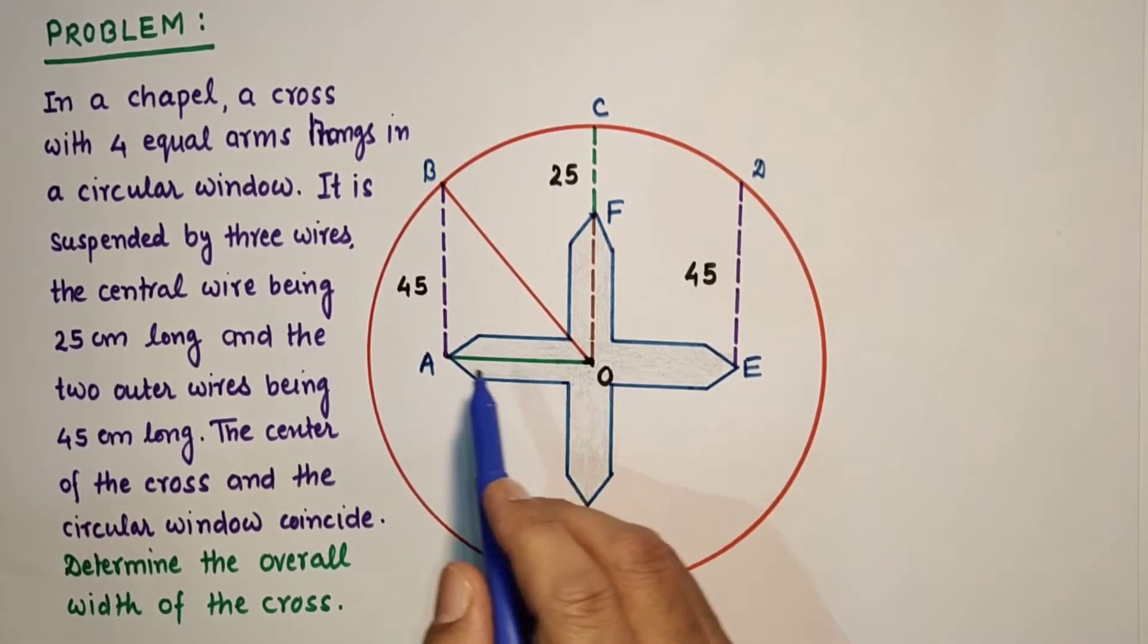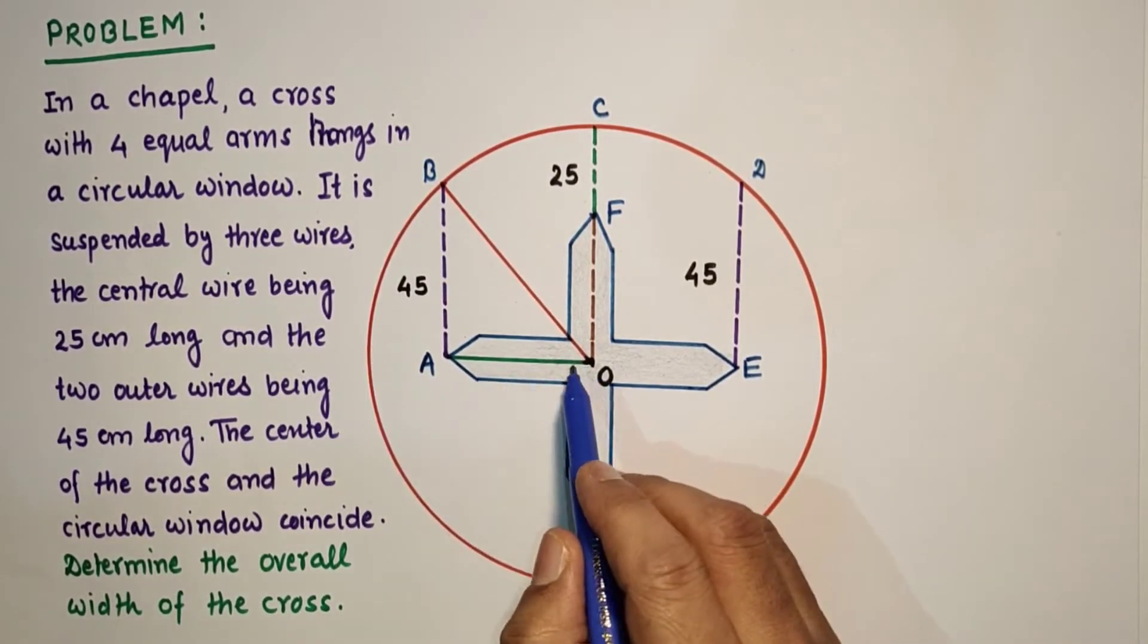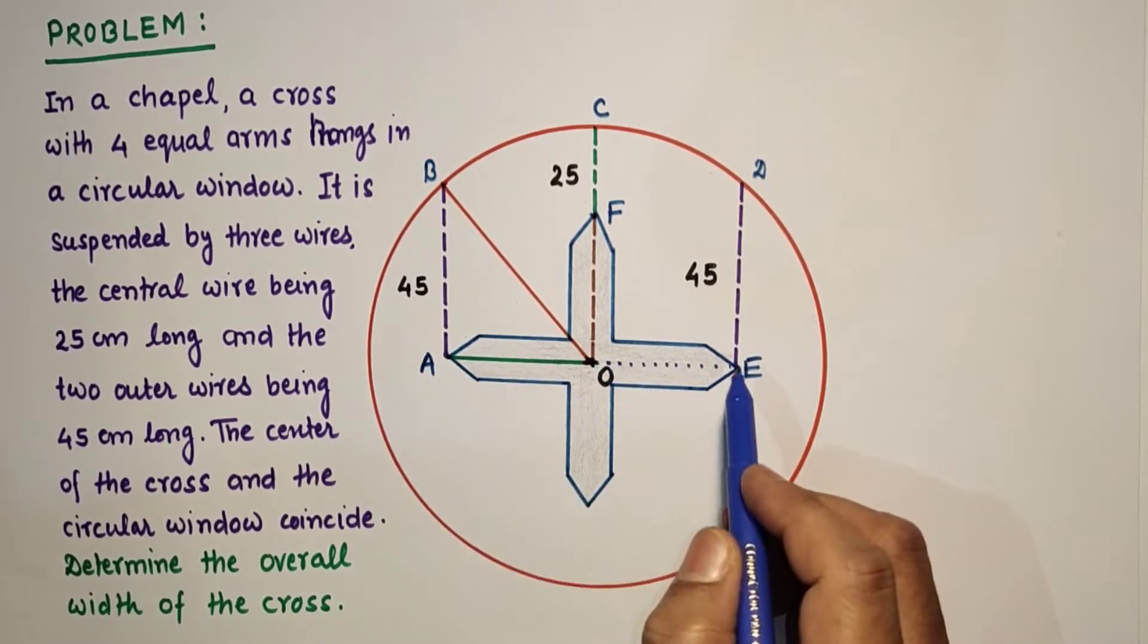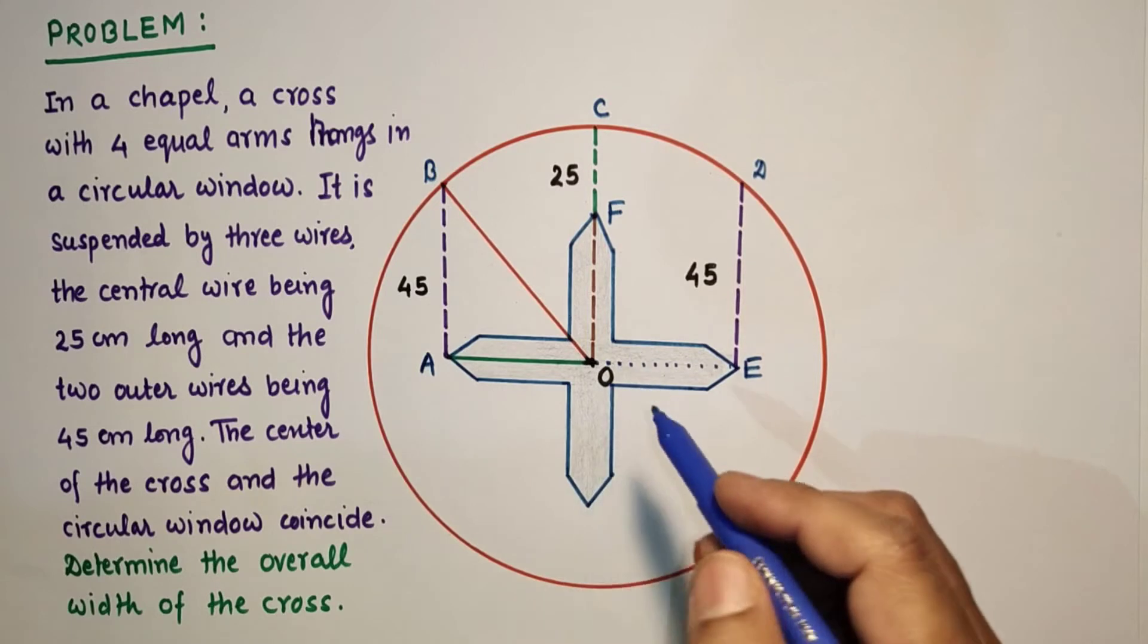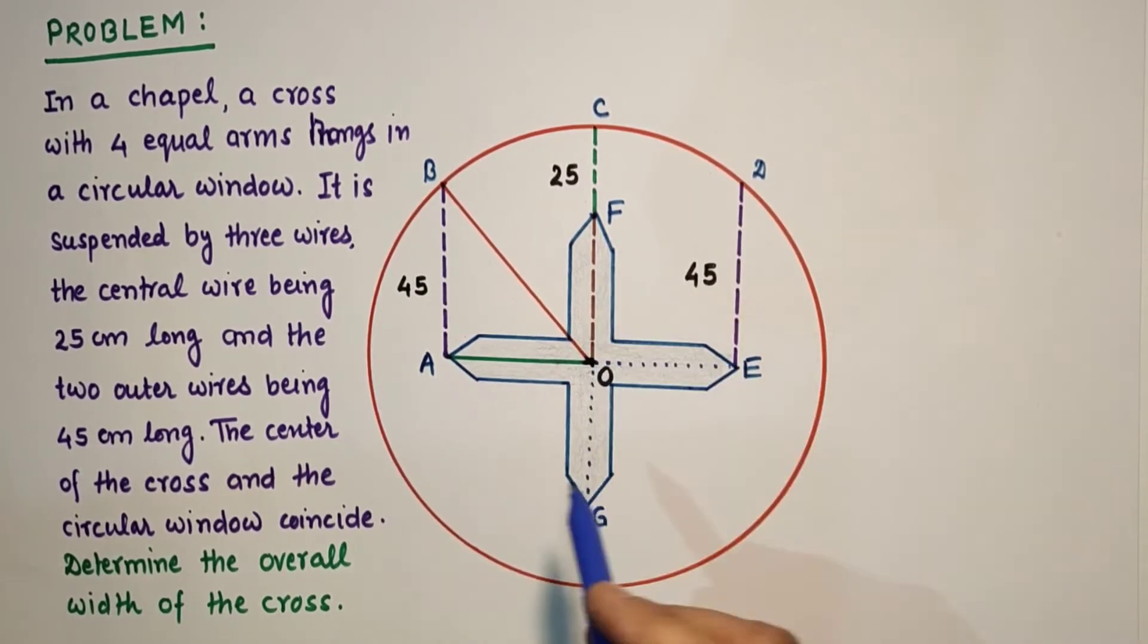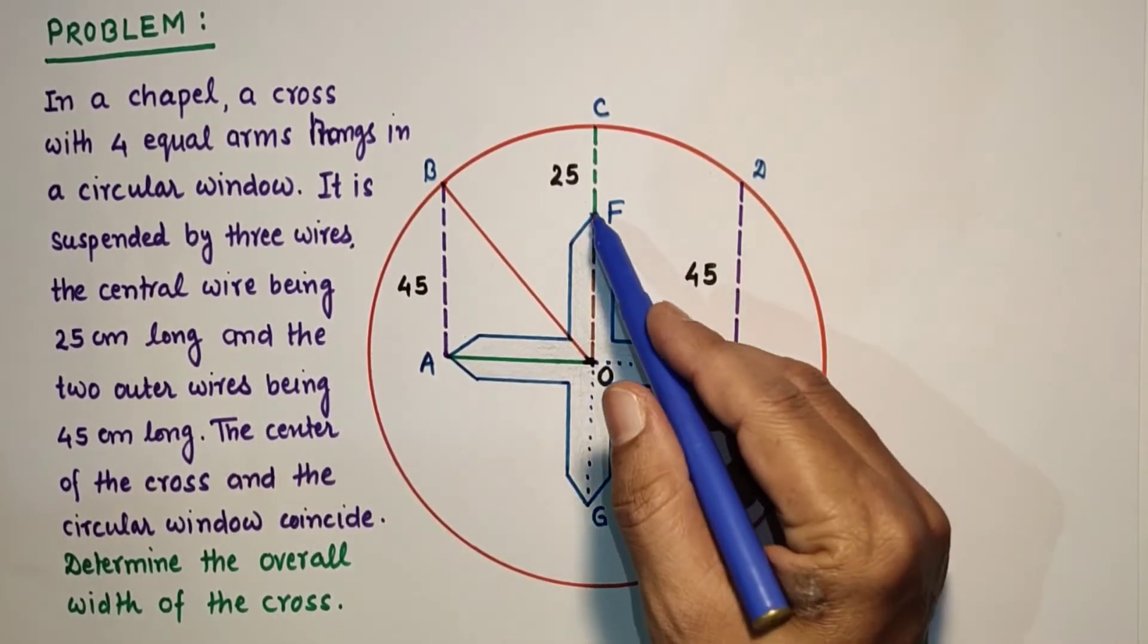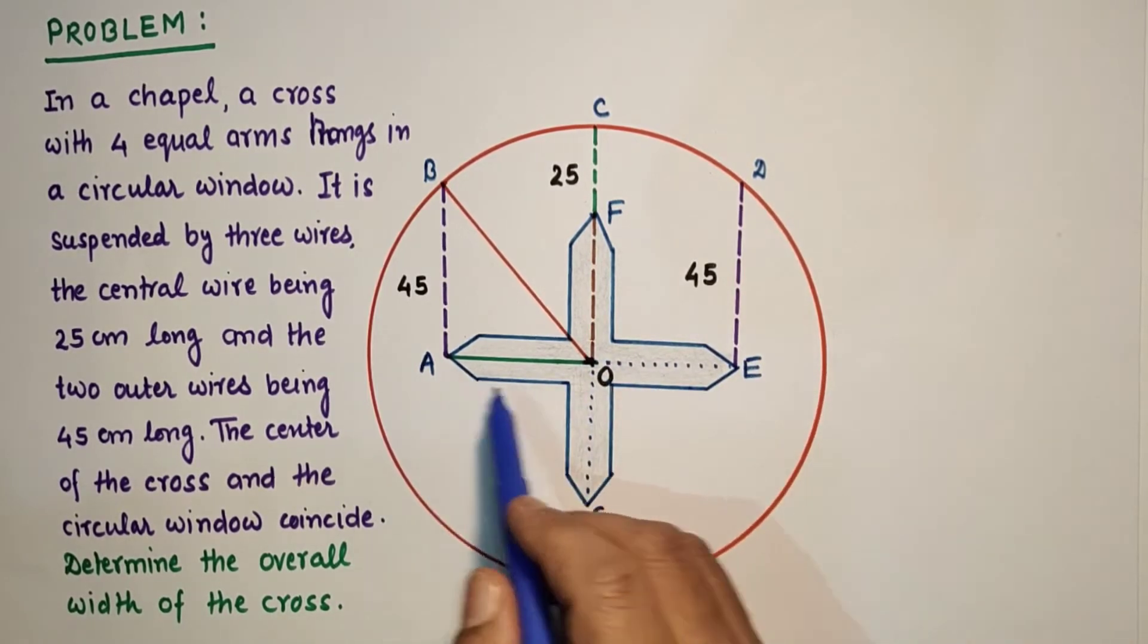So if we join OE also, from A to E, this is the overall width of the cross which is to be found. This AE and FG are the width only. We have to find that. So this AO is equal to OE, FO is equal to OG. All are equal.